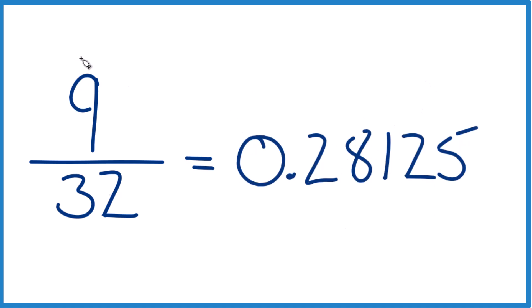But if you need to divide 9 by 32, find 9 32nds, the fraction, as a decimal longhand with long division, that's what we're going to do.